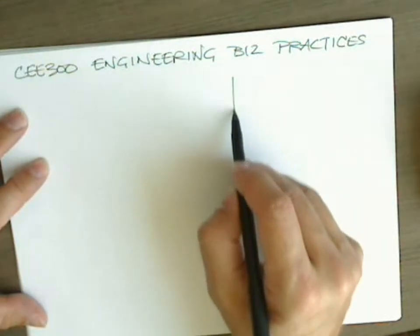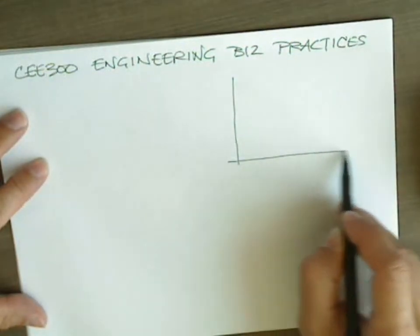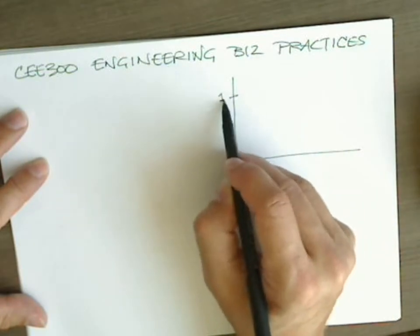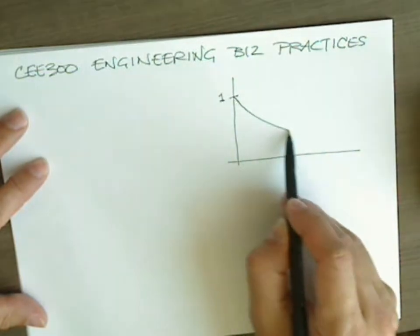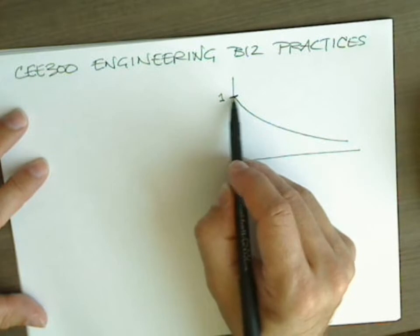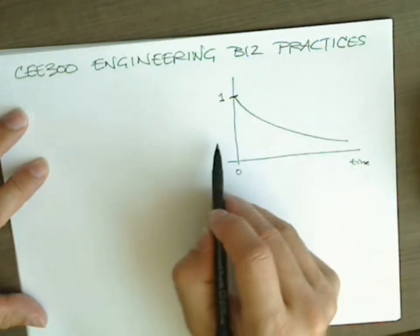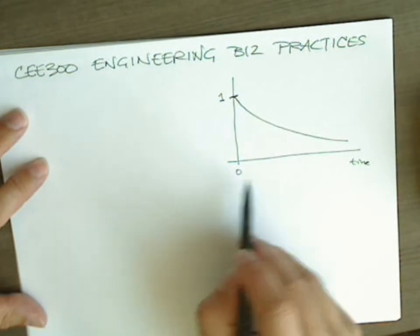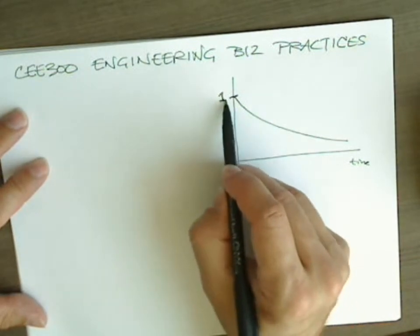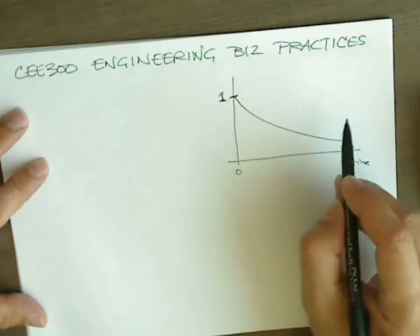In the previous video, we looked at the exponential decay representation of the discount factor. It has to intersect at time equals zero. This discount factor must be equal to one, because at time zero we don't discount anything. We're already at present value.